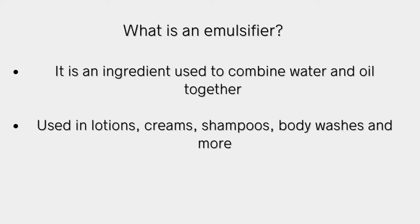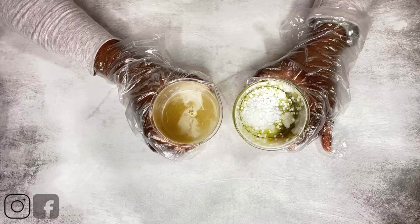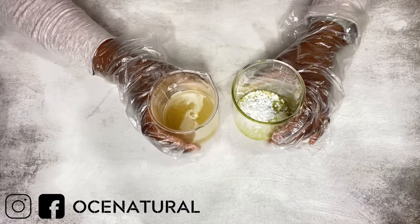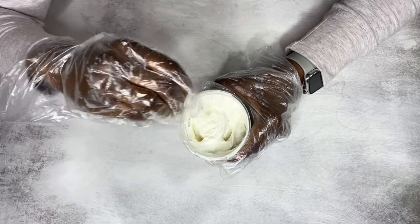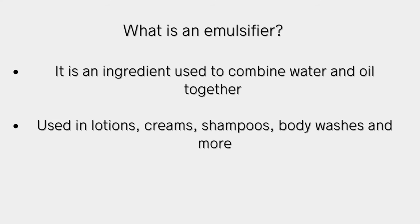Moving on to emulsifiers — it's basically an ingredient that you use to combine your water and oil together so that there's no separation of the product. It's commonly used in your creams, lotions, shampoos, body washes, face washes, and many more products. You cannot make a lotion or cream without some type of emulsifier, otherwise you're going to have separation. There are many different types — naturally derived and synthetic derived as well.